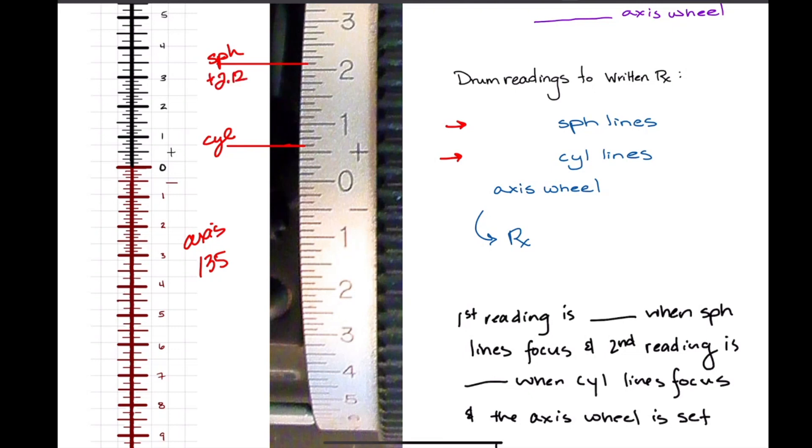So we got plus 2.12 here. What about the cylinder lines? We're right here. This is a half and 75, so what's in between that? 0.62. All right. So then how far did we go when we're going to write this out in the prescription? Sphere comes first and the axis wheel is 135.